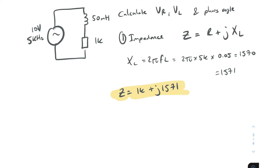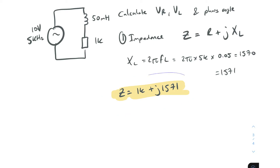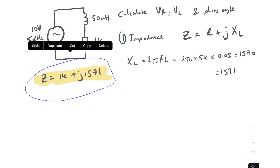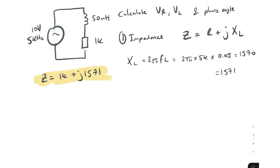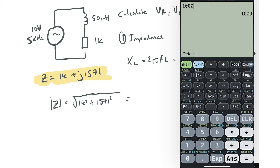Since we're going to calculate current by dividing voltage by impedance, we don't want to divide using rectangular form — we want to use polar form. So let's convert the impedance from rectangular to polar form. To find the magnitude of Z, we take the square root of 1000² plus 1571².